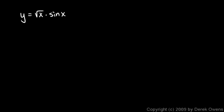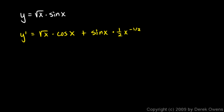Y equals the square root of x times the sine of x. Y prime is going to be the first times the derivative of the second — the derivative of the sine function is the cosine function — plus the second, sine x, times the derivative of the first. When I see the square root, I think of that as x to the 1 half, and so I take the derivative with the power rule: 1 half times x to the negative 1 half.